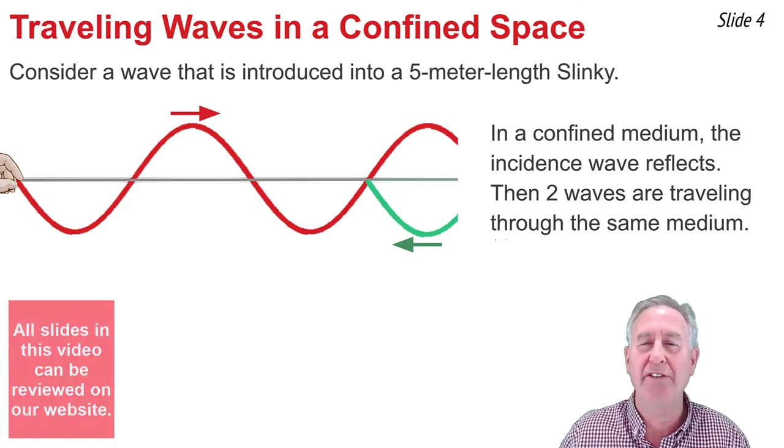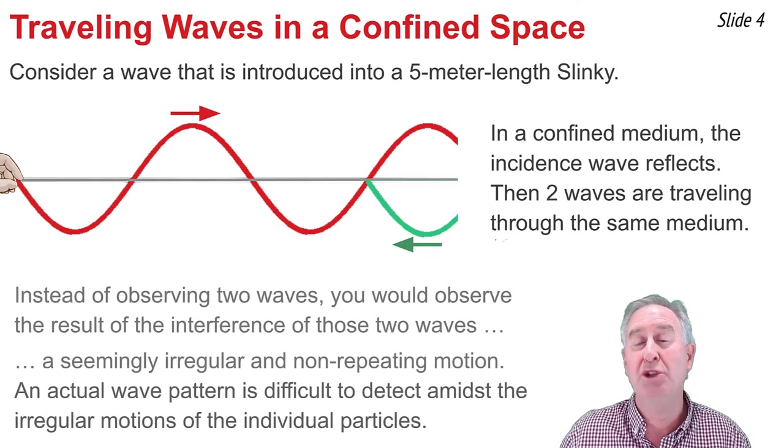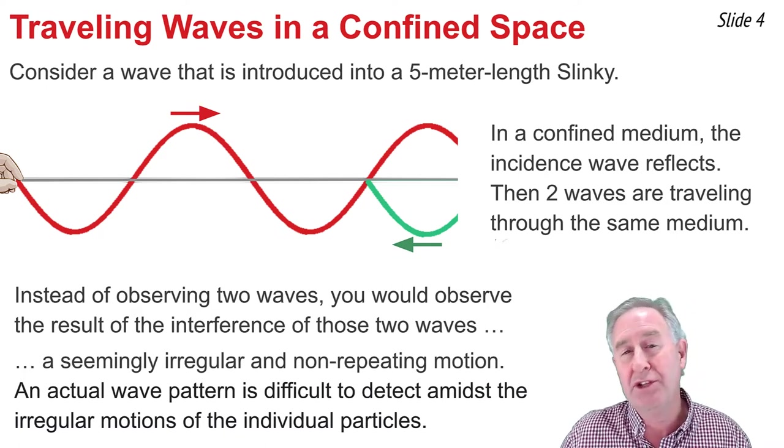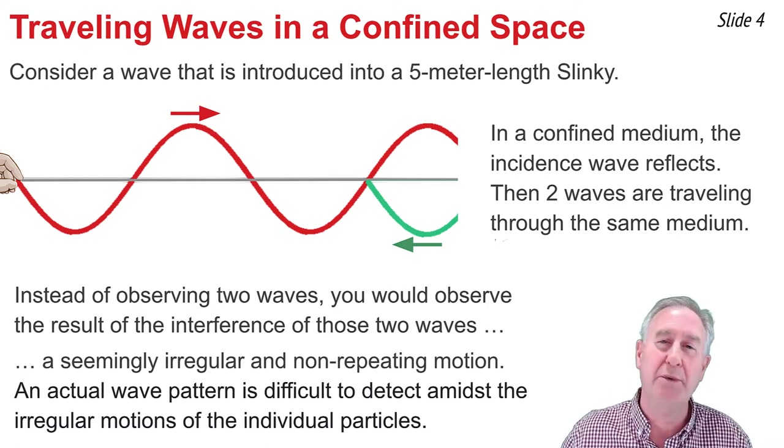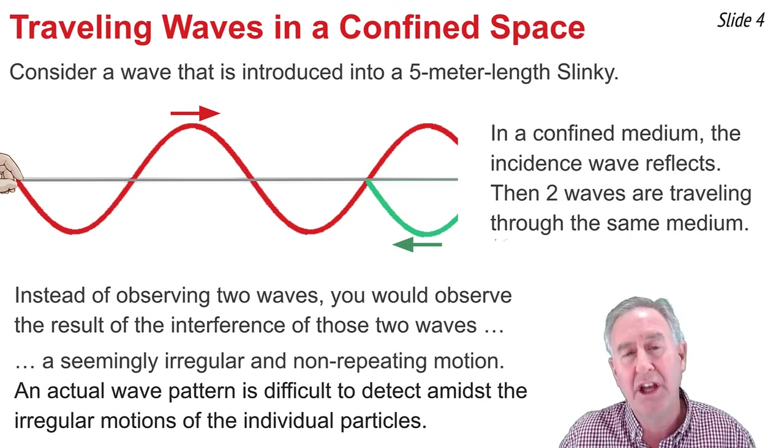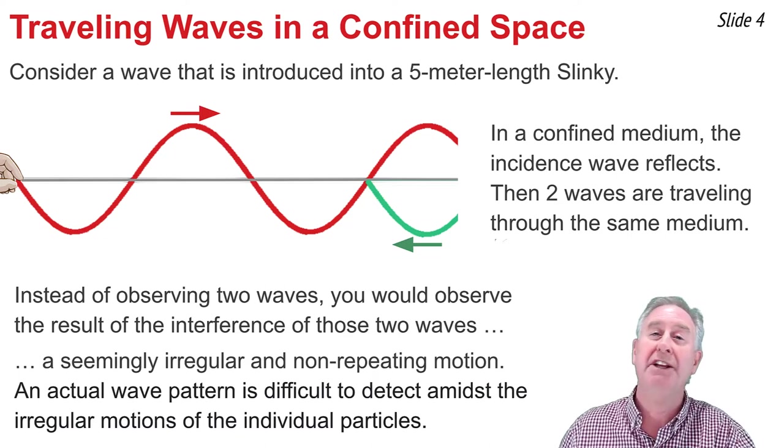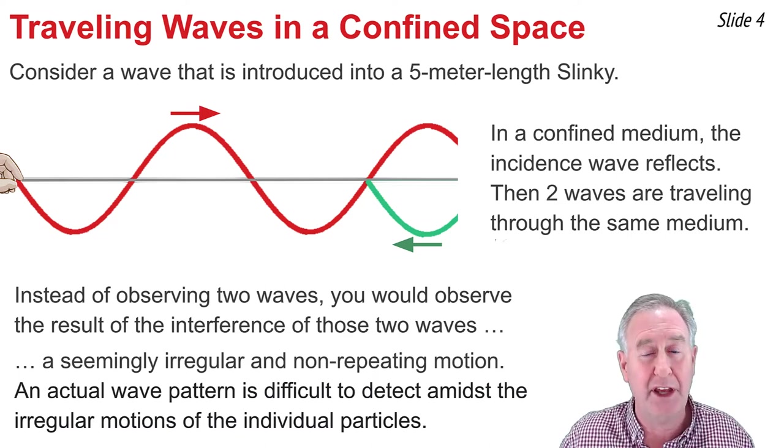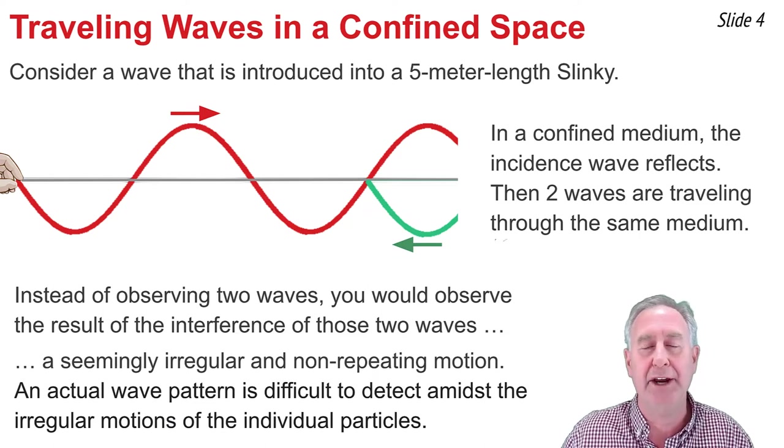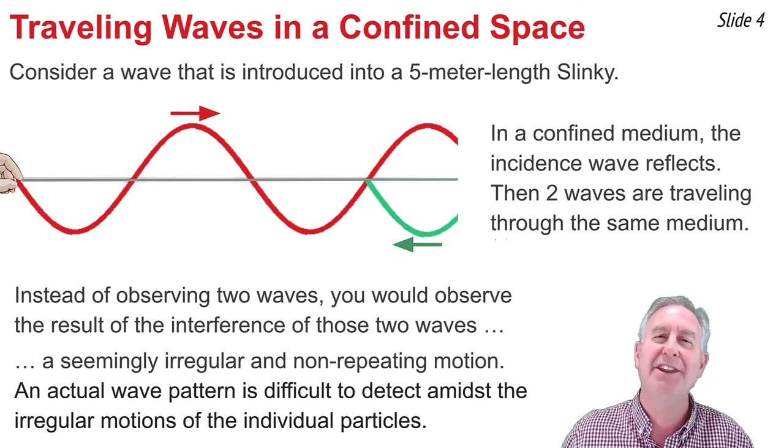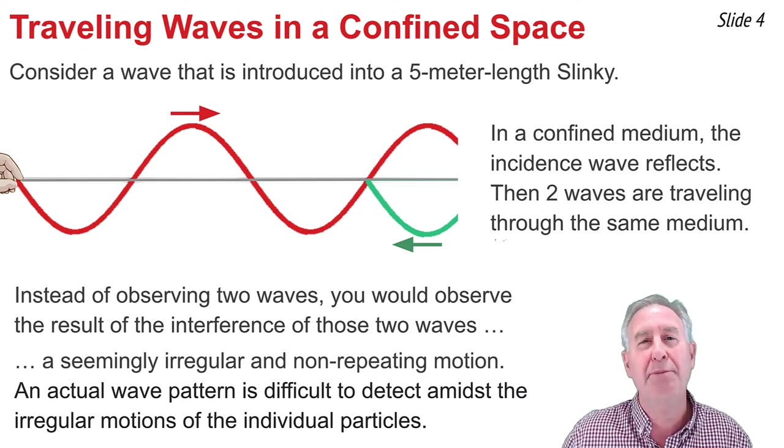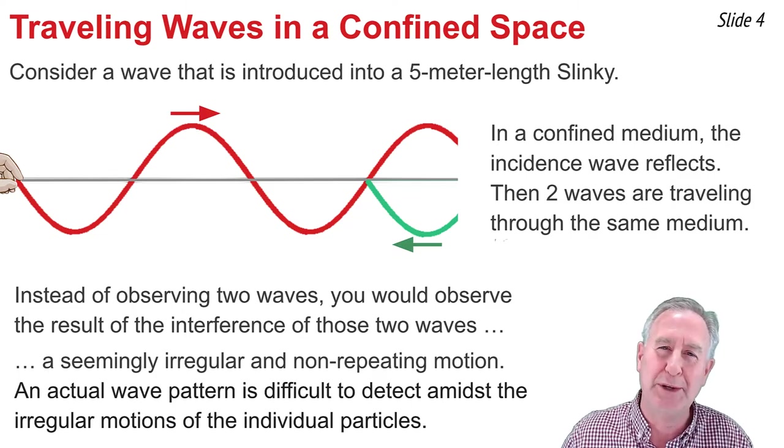The crest would turn into a trough. The result is I would now have two traveling waves moving through that slinky in opposite directions, but instead of seeing two traveling waves moving through the slinky, I would see the result of the interference of the wave I shake in on one end and the reflected wave that comes back off the other end. And that result is an irregular and non-repeating pattern. It would be very difficult to detect the sight of two traveling waves in a confined space such as this amidst the irregular motion of the individual particles.